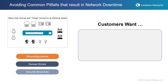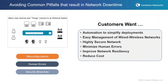With misconfiguration, human errors, and security breaches, automation is a key thing we provide. Anything that can be automated means there's not a human there to make a mistake. Easy management of wired/wireless networks with CN Maestro, highly secure networks, minimizing chances for human errors, improving network resiliency — and doing it by reducing costs. If you don't have problems in your network, that's a huge cost reduction. The time it takes to troubleshoot a network is very costly.